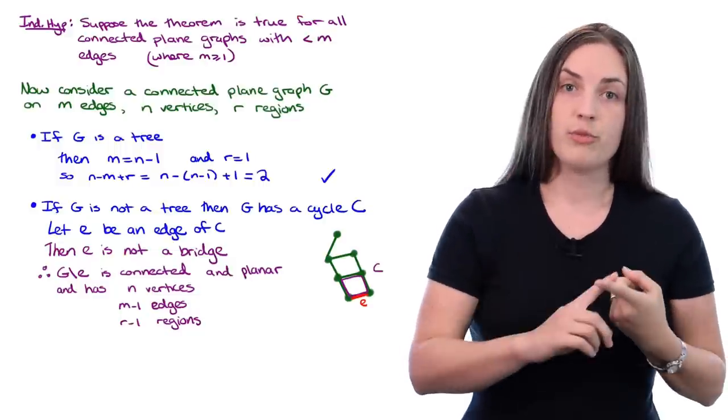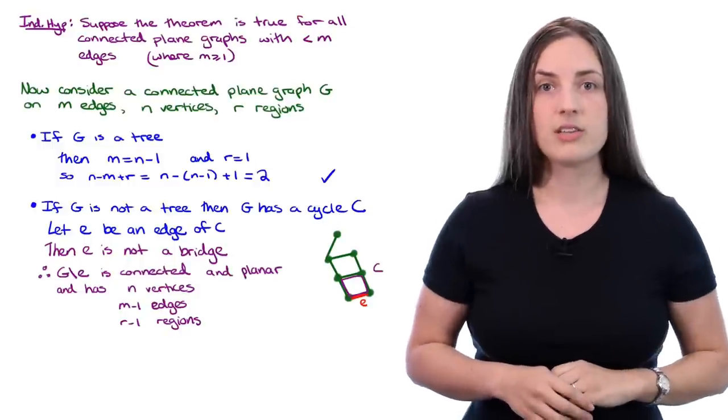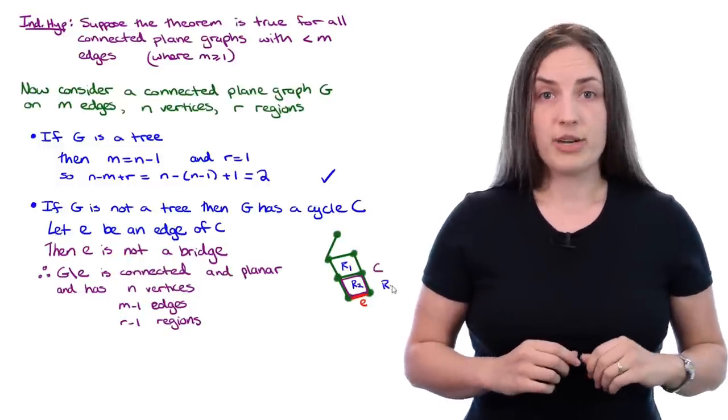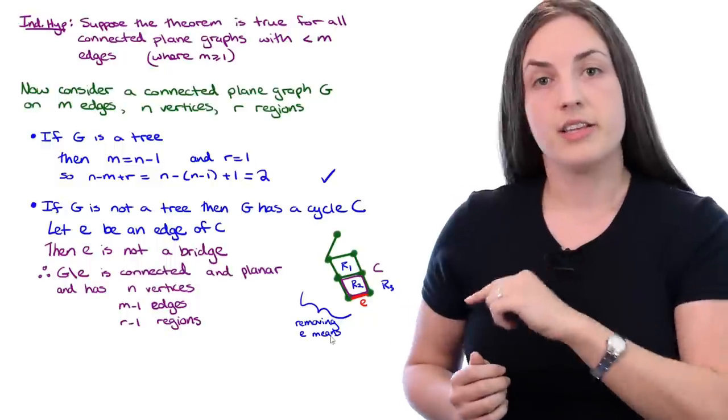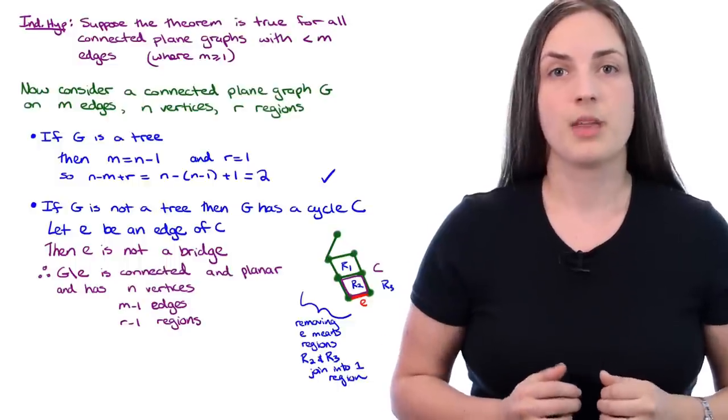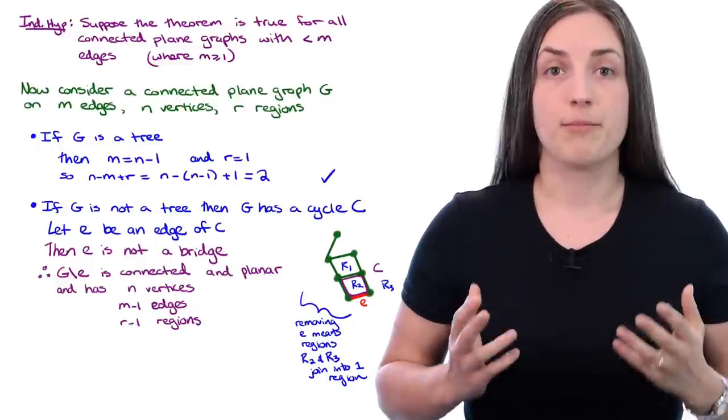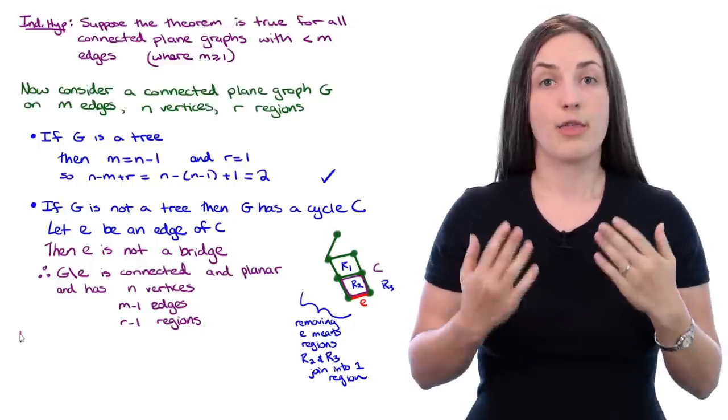Also the graph stays planar. Notice you've removed an edge, so the number of edges goes down by one. The number of vertices stays the same. But look at what happens to the number of regions. Removing edge E means that R2 and R3 join into one region.